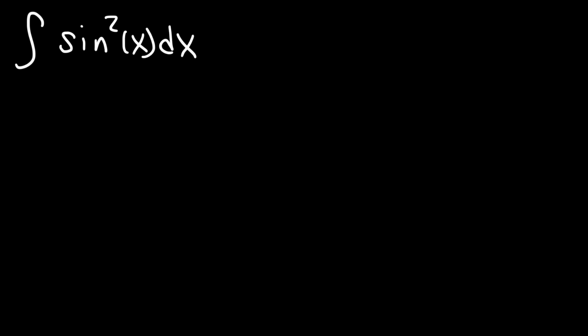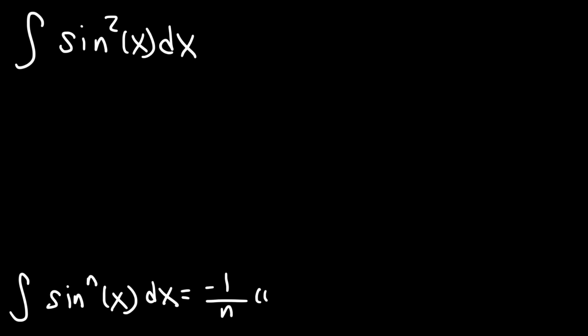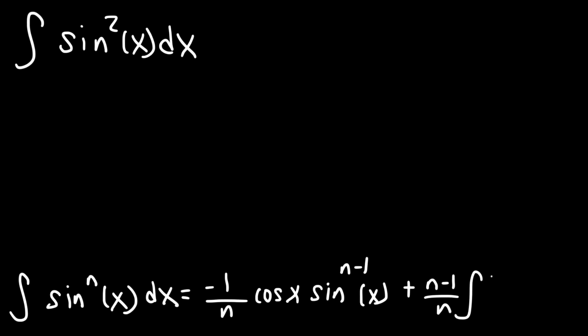How can we find the indefinite integral of sine squared of x dx using the reduction formula for sine? Here's the formula you need to use: the integral of sine raised to the n of x dx equals negative 1 over n, cosine x, sine to the n minus 1 power of x, plus n minus 1 over n times the integral of sine raised to the n minus 2 power of x dx.